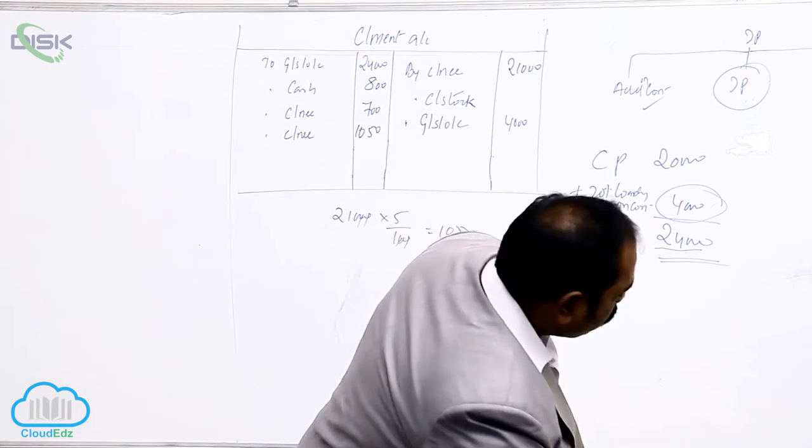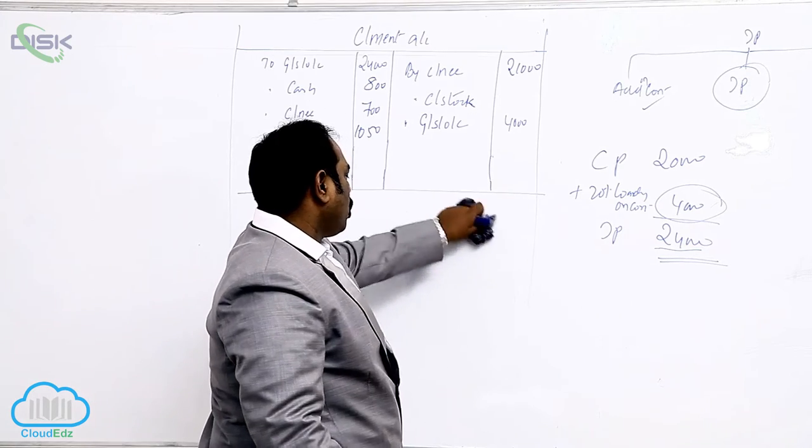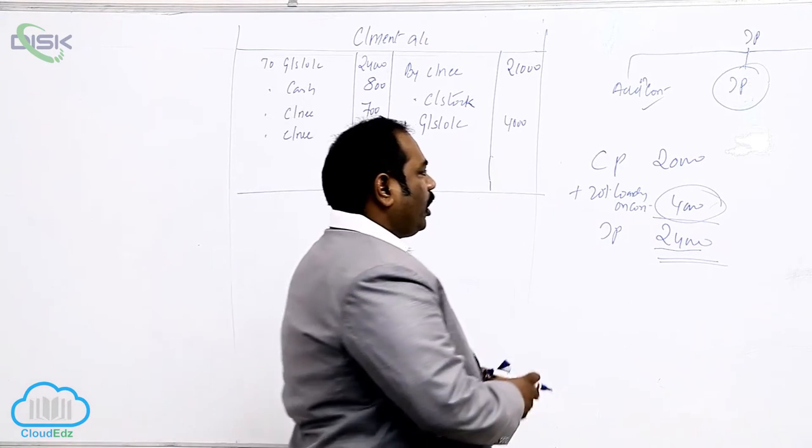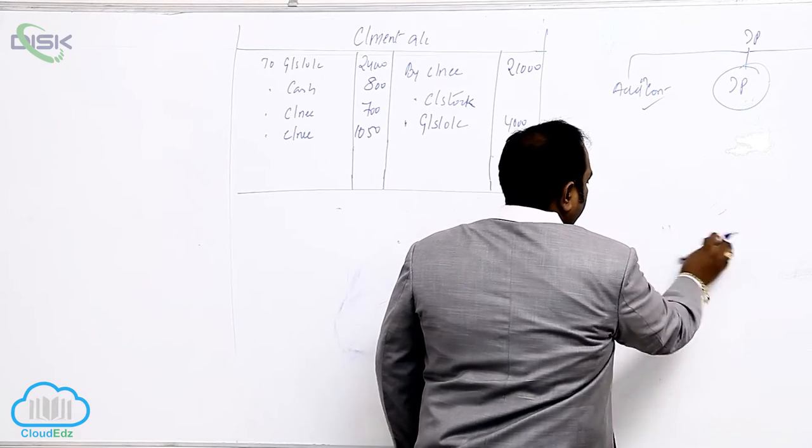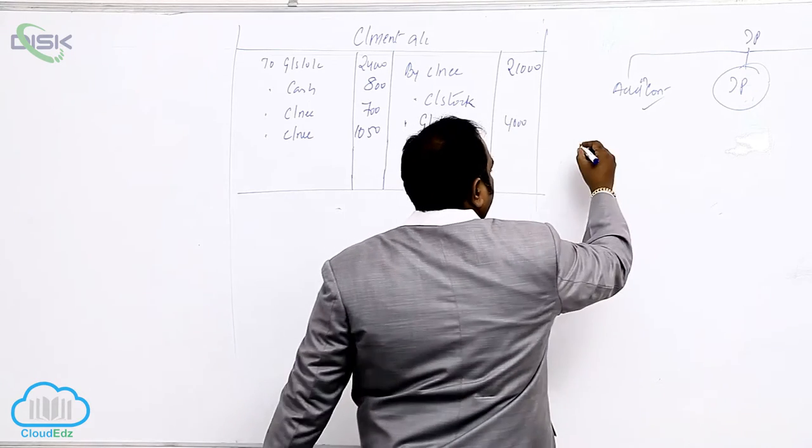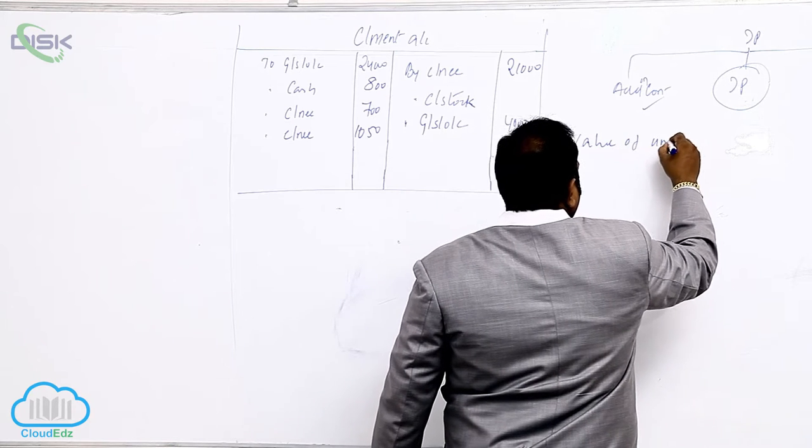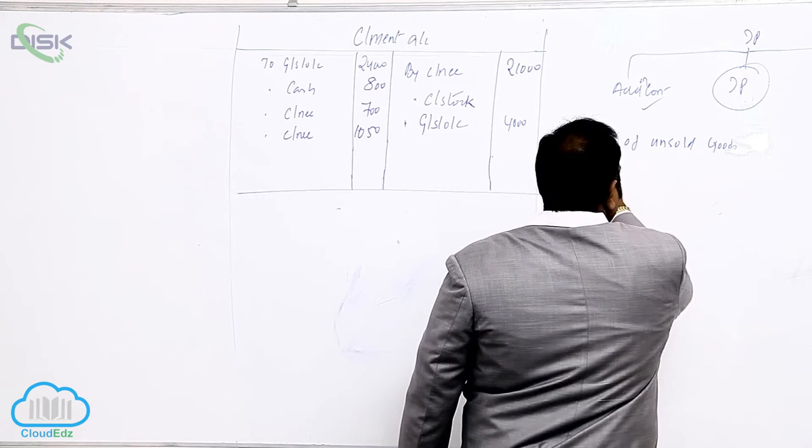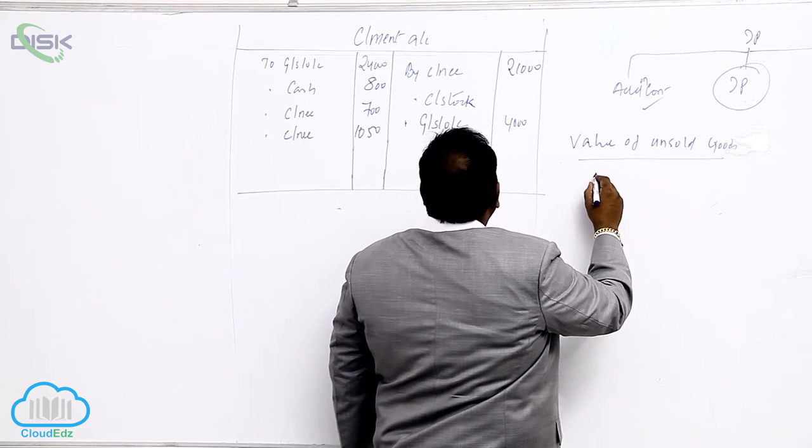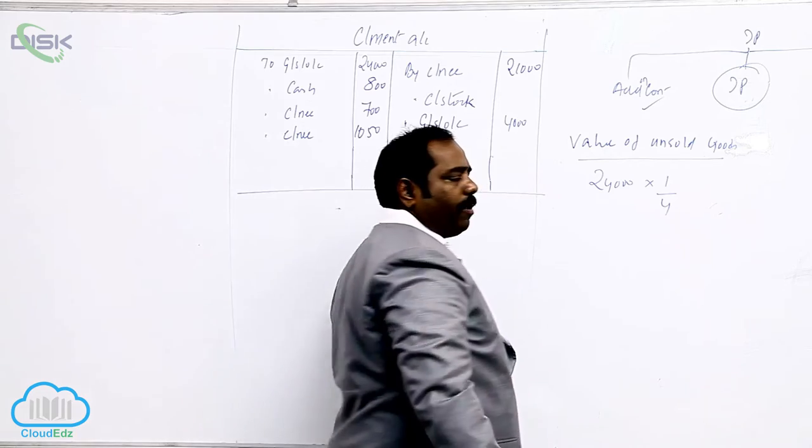Let me know whether there is unsold stock in the problem or not. In this problem, there is unsold stock because only three-fourths of the goods has been sold. So what is the value of unsold stock left? Out of 24,000 goods sent, three-fourths has been sold, so one-fourth is remaining.